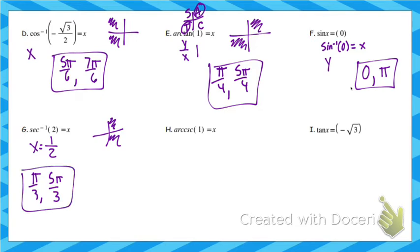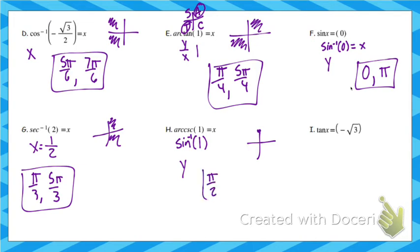Arc cosecant — that means inverse. Cosecant is the reciprocal of sine, and 1 divided by 1 is still 1, so we're doing sine inverse of 1. That's the y-coordinate, so find when the y-coordinate is 1 on your unit circle. That only happens at one place: pi over 2.